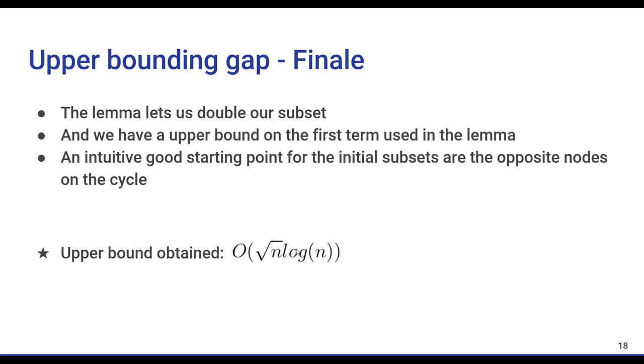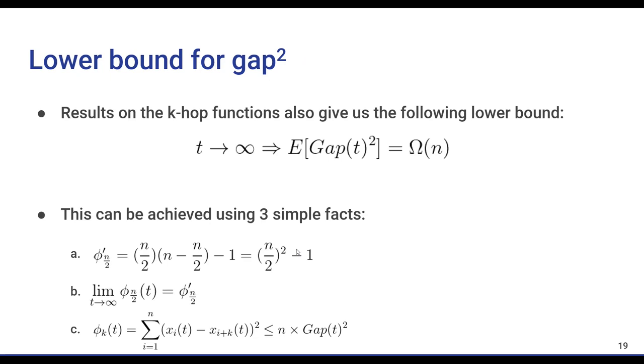And we do this with these three simple steps. What we are trying to prove is that as the number of balls goes to infinity and increases, the expected gap squared is omega of n. The first and second facts are what we saw while analyzing the k-hop functions. The third fact is also an observation following the fact that each of these parentheses is less than gap squared. Putting these three together, we can easily get our lower bound.